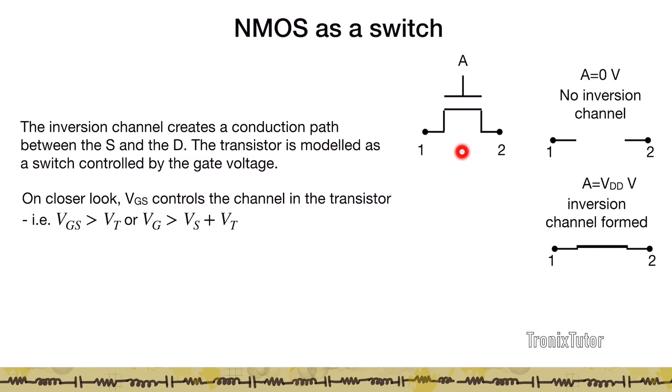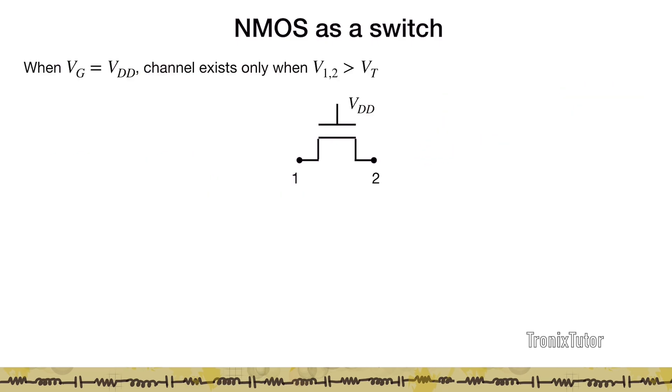Now let's take a little closer look at the nMOS switch. When is the channel formed? Remember in this previous model, we didn't really pay attention to the source and drain. But in reality, if you think about when the transistor channel is formed, the transistor channel is formed when VGS is greater than VT. It's not VG greater than VT. It is VGS that is greater than VT. So, once you identify which is the source among these two terminals, the gate has to be a VT higher than the voltage at the source for this transistor to keep conducting current. That means, suppose I had applied VDD at this terminal, then at least one of these two terminals have to have a voltage of VDD minus VT for this transistor to remain on or for an inversion channel to be formed between nodes one and two. Let's look at this a little closer.